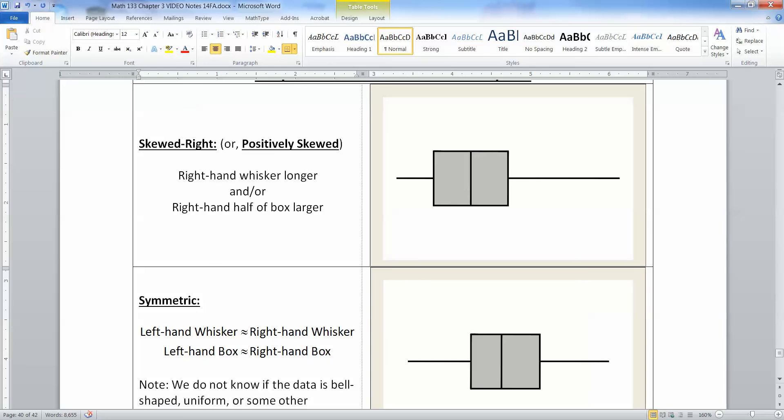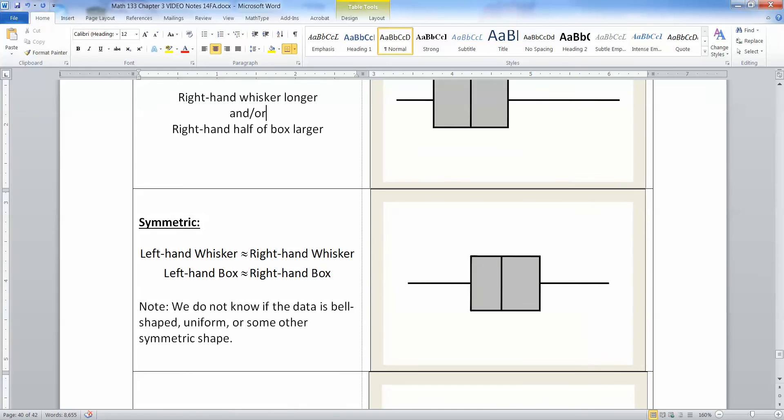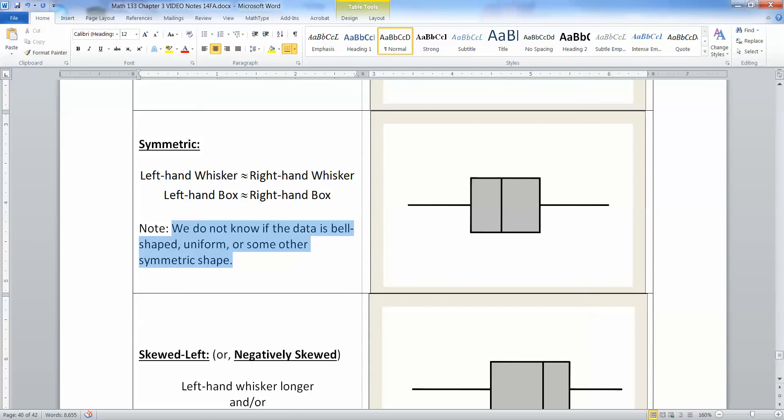Whereas up here, the box was pretty even, but the whiskers were not even at all. Remember that the whisker is where the tail is going to go, because that's where your outliers are going to be. We do not know, by the way, even if it's symmetric, we don't know if it's bell-shaped or uniform or some other symmetric shape. There are actually a lot of symmetric shapes. They're not all that normal curve that we like so much. But we do know that it's roughly symmetric.